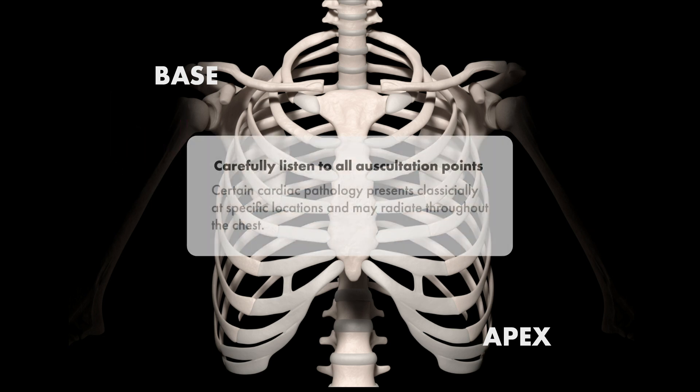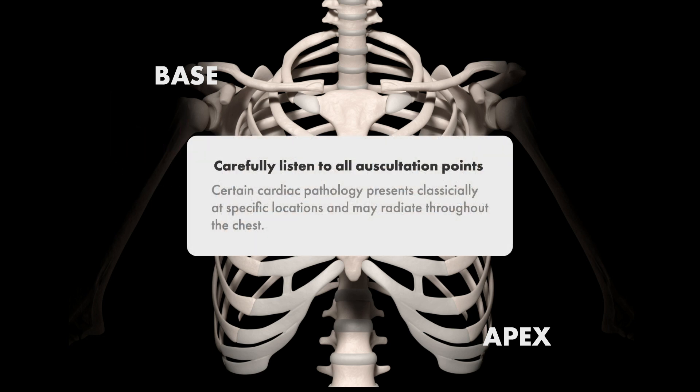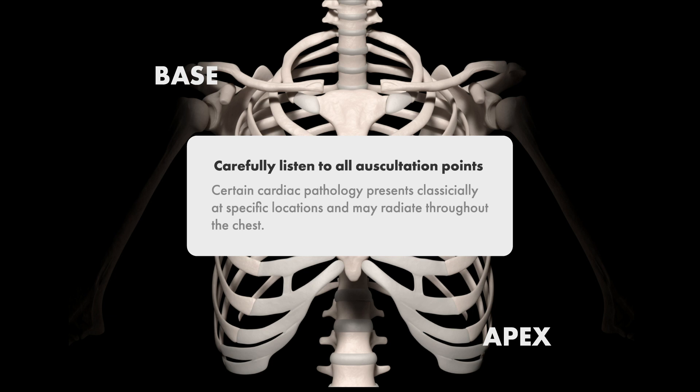Heart sounds and murmurs will often have an area of maximal intensity and radiation across the chest, but we'll leave that for another video in this series. For now, just remember that when listening to heart sounds, start at one end of the precordium and inch your stethoscope towards the other side, noting what you hear at each auscultation point.